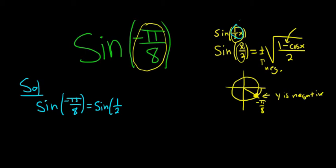What could x possibly be? We need a number that when we multiply it by 1/2, it's going to give us negative π over 8. That number would be negative π over 4. That's our x, negative π over 4.